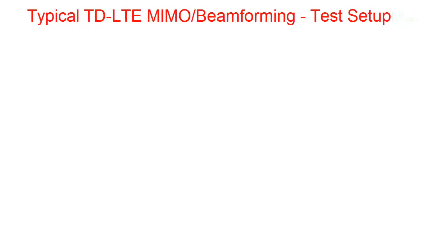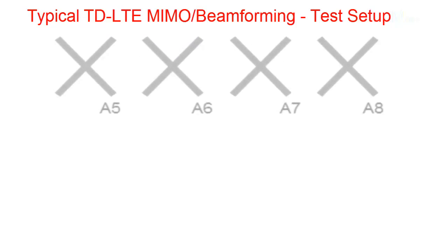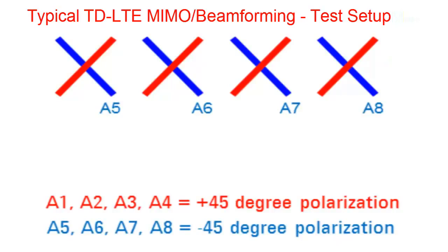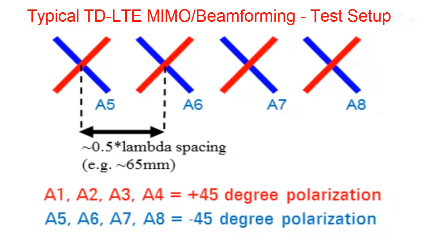Let's consider a typical TD-LTE MIMO beamforming transmission mode 7 and 8 test configuration. A typical 8-element physical antenna configuration used within TD-LTE today consists of two groups of antenna elements, each group cross-polarised at 90 degrees to each other. Antenna group 0 consists of elements 1 through 4, polarised at plus 45 degrees. Antenna group 1 consists of elements 5 through 8, polarised at minus 45 degrees. Each antenna element within a group is spatially separated by approximately half the RF carrier wavelength, providing a high degree of correlation within the group — good for beamforming. Since the two groups are cross-polarised, there is low correlation between them, which is good from a spatial multiplexing point of view.